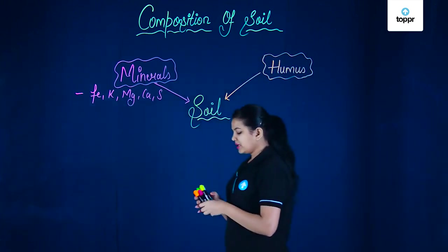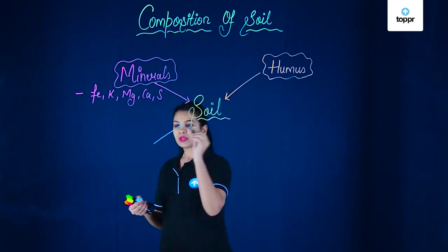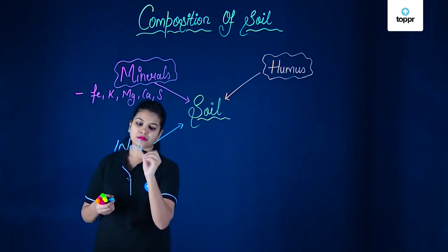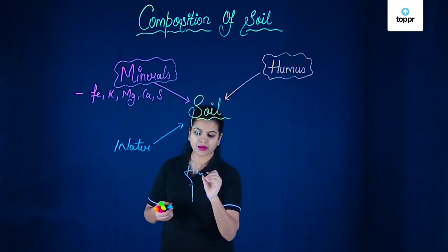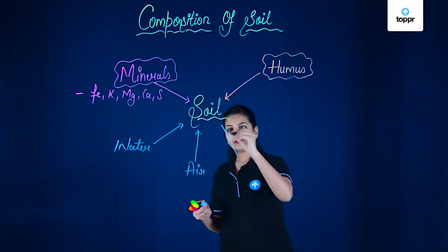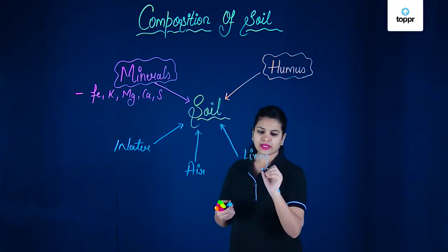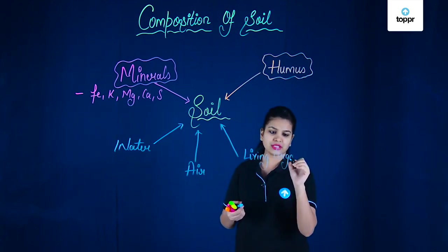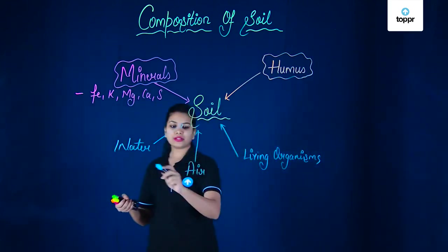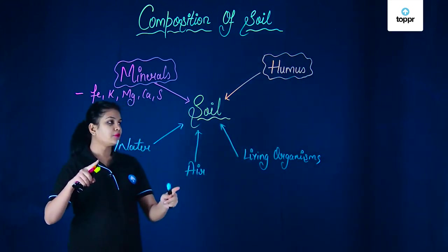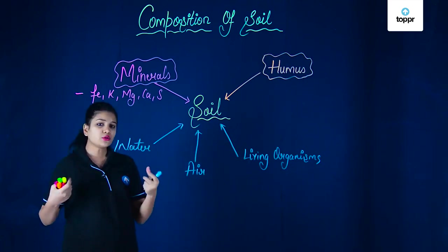Now besides these we see that there are few more important components in which there is water, then there is air and besides these two there are a number of living organisms. Now we just said that for the formation of humus we need the dead and decomposing animals and plants. Now what are the decomposers?